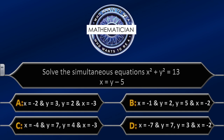Question ten: solve the simultaneous equations x² plus y² equals 13 and x equals y minus 5. The four possible answers are: A — x equals minus 2, y equals 3 and y equals 2, x equals minus 3; B — x equals minus 1, y equals 2 and y equals 5, x equals minus 2; C — x equals minus 4, y equals 7 and y equals 4, x equals minus 3; D — x equals minus 7, y equals 7 and y equals 3, x equals minus 2. I'm going to give you one minute — this is the toughest question of the entire quiz.